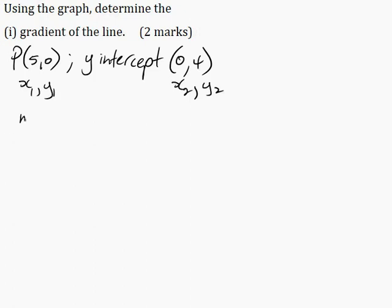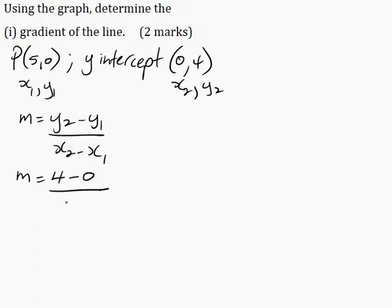The formula for the gradient m is y2 minus y1 all over x2 minus x1. Substituting the values: this is 4 minus 0 all over 0 minus 5. So 4 minus 0 is 4, and 0 minus 5 is minus 5. A minus and a plus is a minus, so this becomes minus 4 over 5.